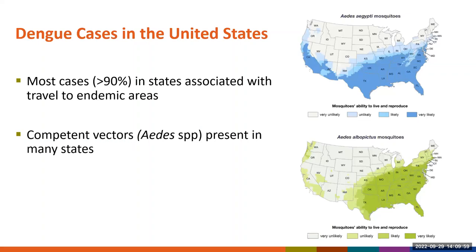Dengue cases in U.S. states are usually associated with travel to endemic areas, although locally acquired cases have been reported in some states, including Florida, Texas, and Hawaii. However, there is a risk for local transmission of dengue because the mosquito vectors are present in multiple states, particularly in the southern United States.